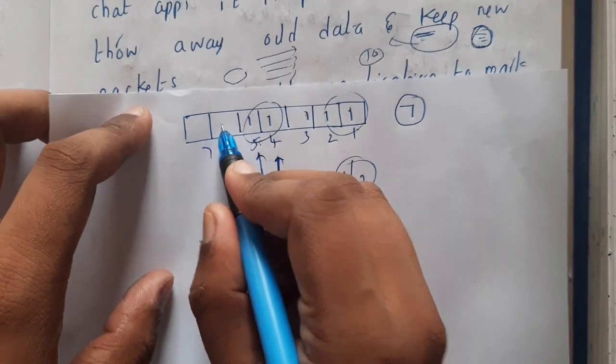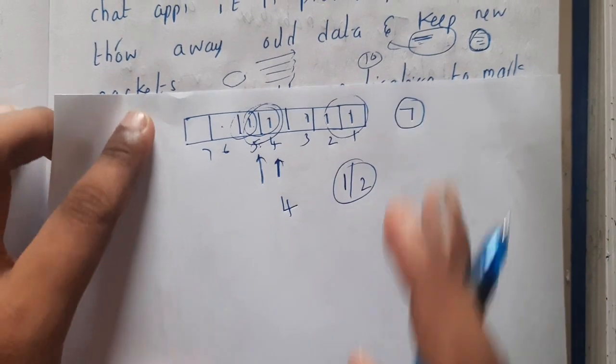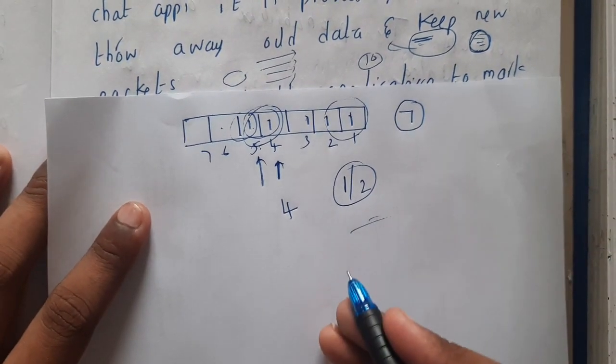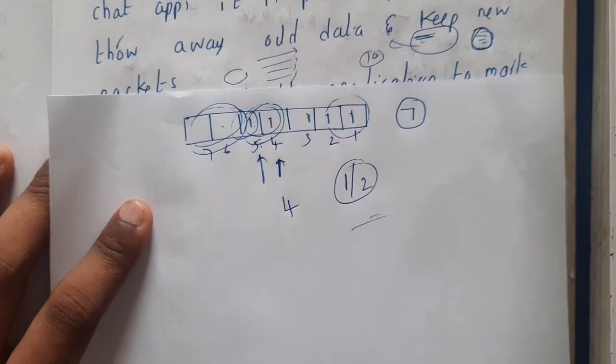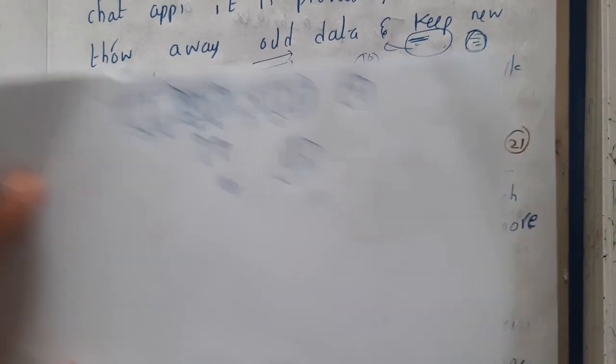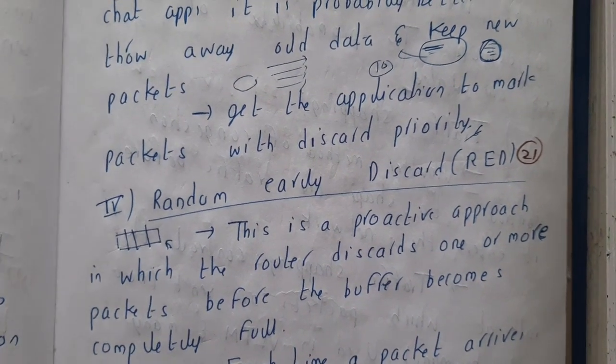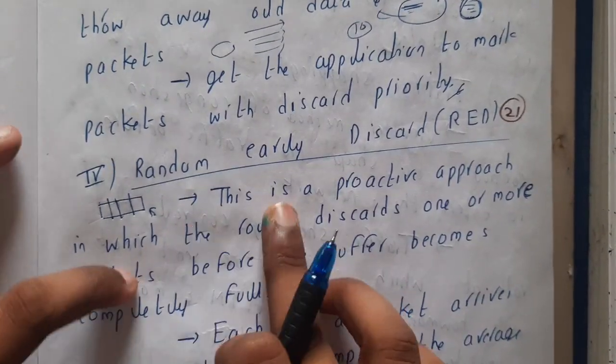This is a proactive approach because congestion didn't even happen - you're taking care of it beforehand. Once you go through the theory, you'll have a clear idea.